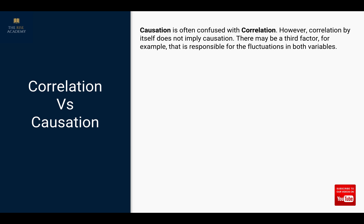Causation is often confused with correlation. However, correlation by itself does not imply causation. There may be a third factor, for example, that is responsible for the fluctuations in both variables.